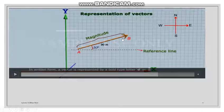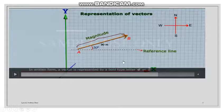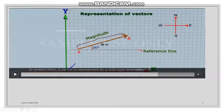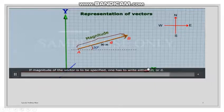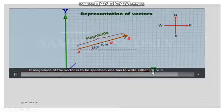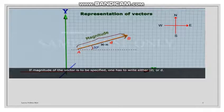To repeat: this is the tail and this is the head. We can write the vector name — let's say D — with an arrowhead on top, or write D in bold letters, or show D with its magnitude. Bold letters or an arrowhead notation is used to represent vectors.